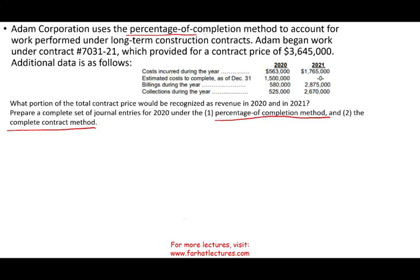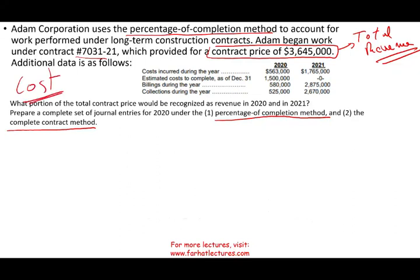Adam Corporation uses the percentage of completion method to account for work performed under long-term construction contracts. Adam began work under a contract which provided a contract price of $3,645,000. Simply put, this is your total revenue. On the CPA exam, don't expect total revenue to change — it could change, but what you would expect to change throughout the life of the contract is the cost.